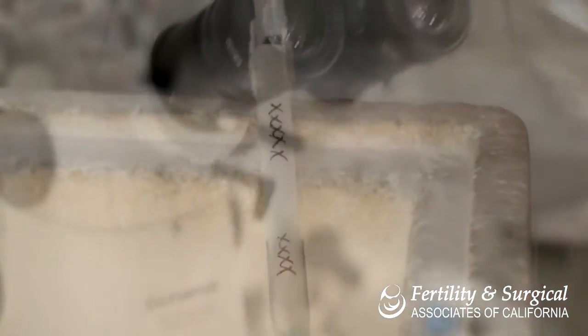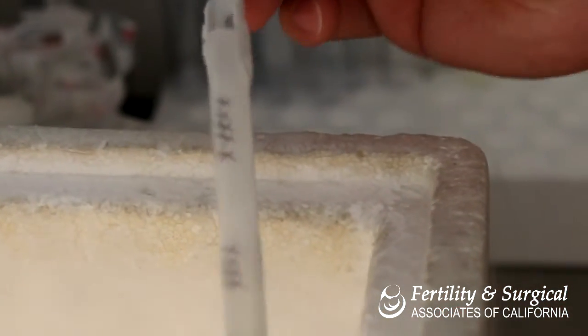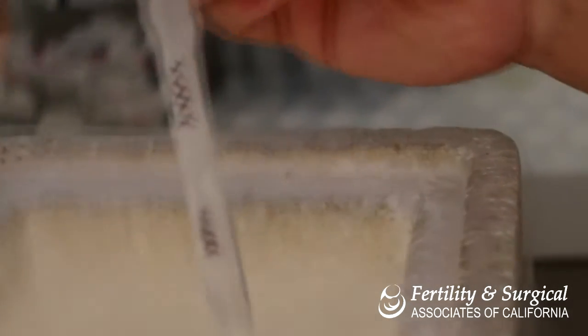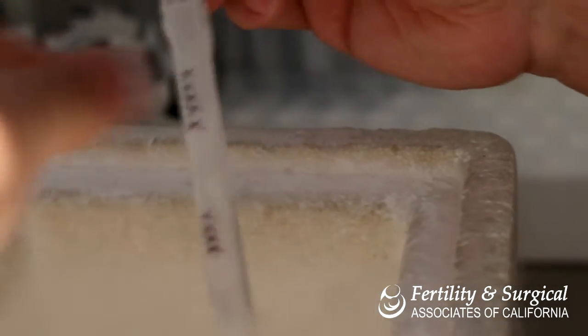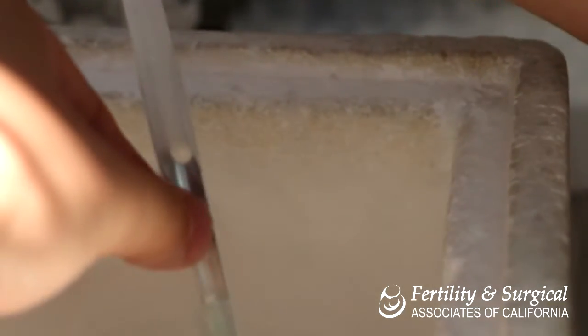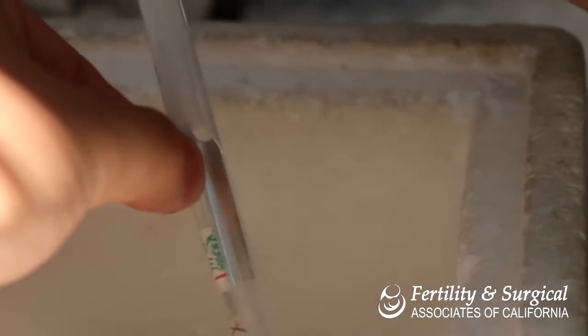Step 2: Fill styrofoam container with liquid nitrogen and pick up correct patient cane from tank. Check patient information with transfer paperwork to confirm. Place the container close to the microscope for rapid manipulation.